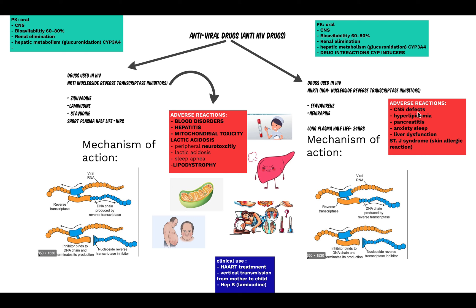The adverse reactions of efavirenz and nevirapine include CNS effects such as hallucinations, euphoria, anxiety, sleep disturbances, and panic. Another important one is Stevens-Johnson syndrome, a skin allergic reaction. They can also lead to hyperlipidemia, pancreatitis, and various hepatic conditions. Pharmacokinetically, they are orally administered, and importantly they are CYP cytochrome P450 inducers, so they can interact with other drugs. Their main clinical uses are in HAART, prevention of vertical transmission from mother to child, with nevirapine being specific for this.